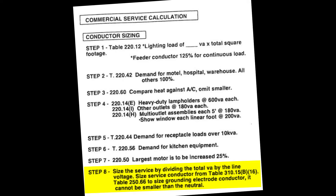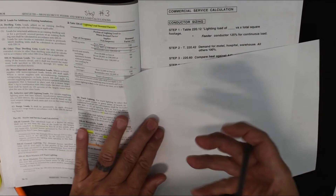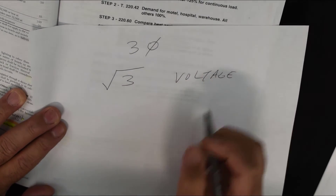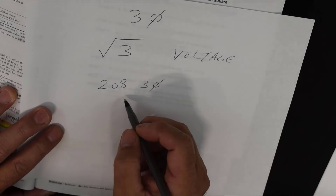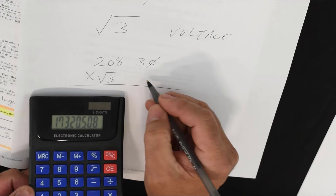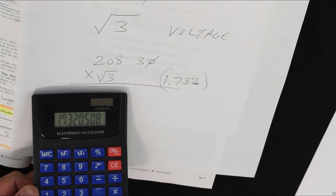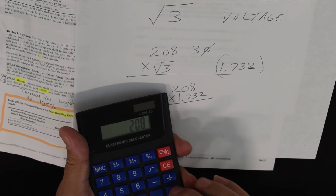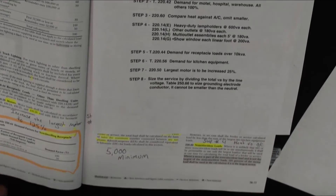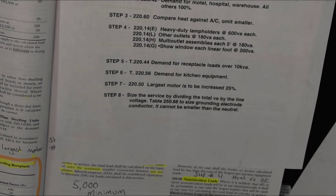Step 8 is to add everything up and divide by the line voltage. For a 240-volt system, you divide by 240. Most commercial buildings use a three-phase system, and on a three-phase system you must apply the square root of three to the voltage. For example, on a 208-volt three-phase system, you divide your total load in VA by 208 times 1.732 — which equals 360.256 — not by 208 alone. So your total load in VA is divided by 360.256 for a 208-volt three-phase system.